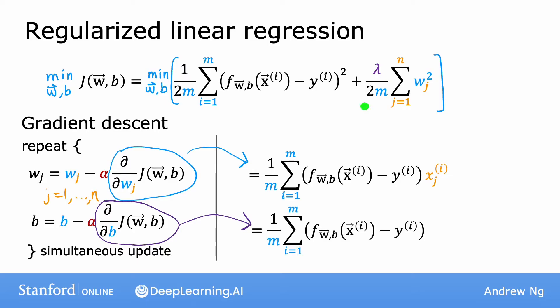Now that we've added this additional regularization term, the only thing that changes is that the expression for the derivative with respect to w_j ends up with one additional term. This plus lambda over m times w_j. And in particular, for the new definition of the cost function j, these two expressions over here are the new derivatives of j with respect to w_j and the derivative of j with respect to b.